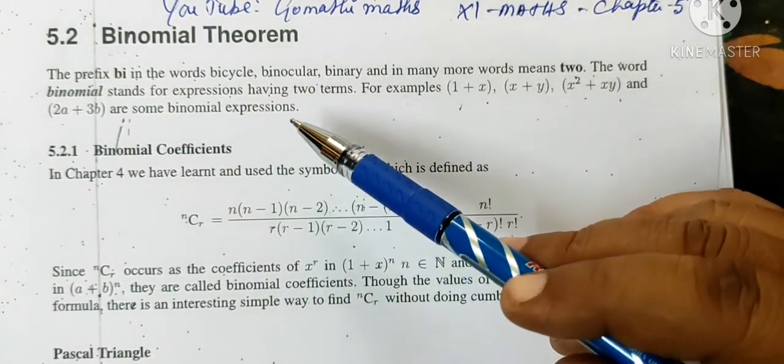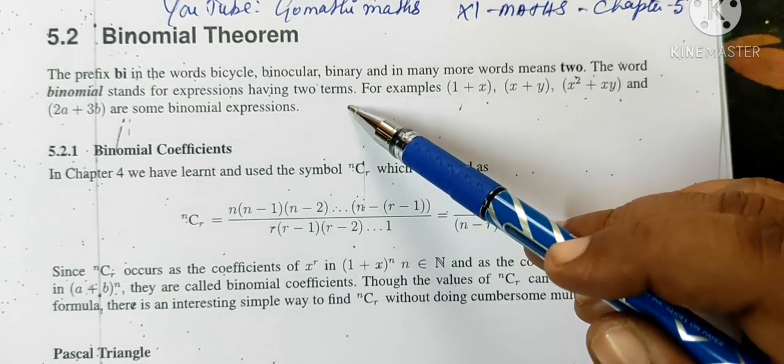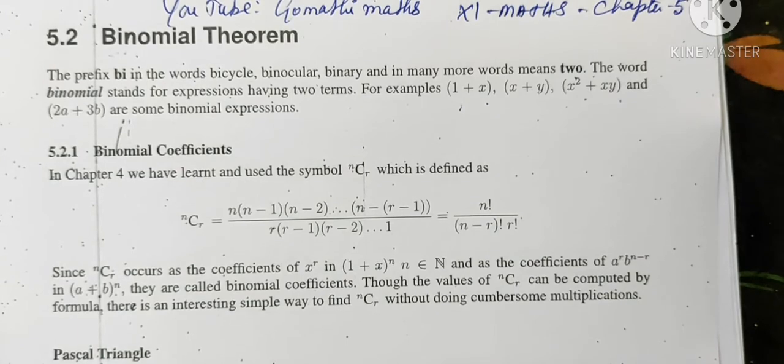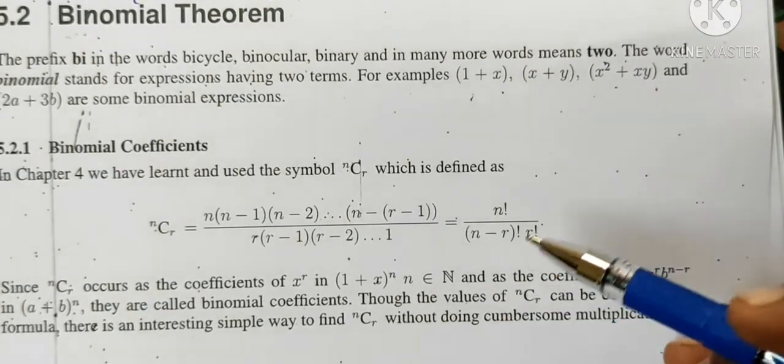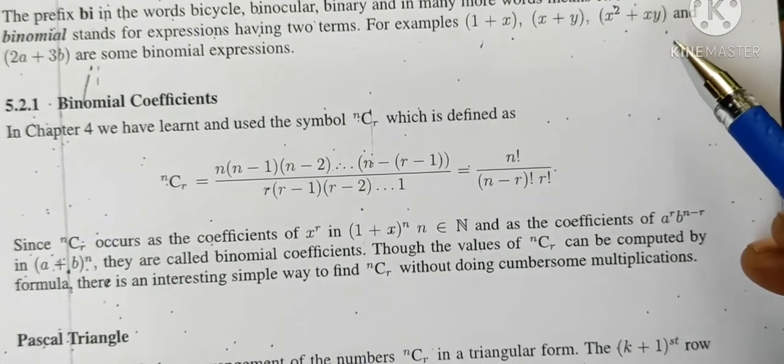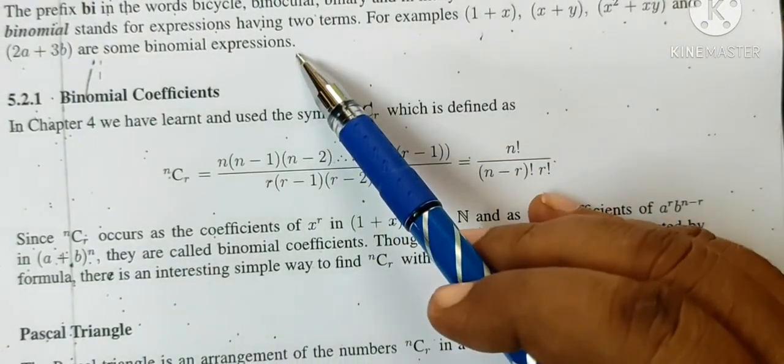The word binomial stands for the expression having two terms. For example, 1 plus x, then x plus y. These are examples of some binomial expressions.